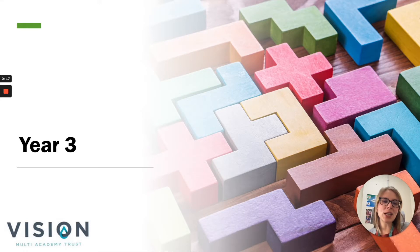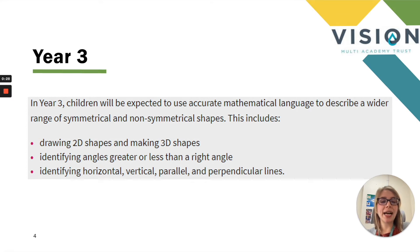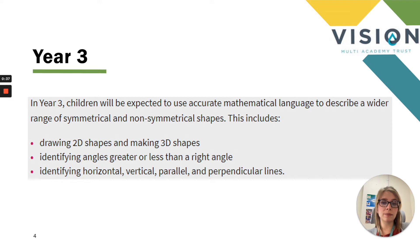So let's start off today in year three. In year three, children will be expected to use accurate mathematical language to describe a range of symmetrical and non-symmetrical shapes, including drawing 2D shapes and making 3D shapes. It includes identifying angles greater or less than a right angle and identifying horizontal, vertical, parallel and perpendicular lines.